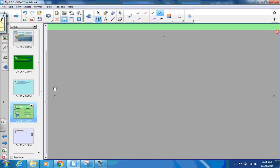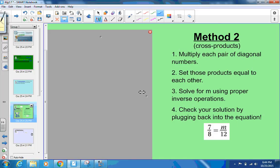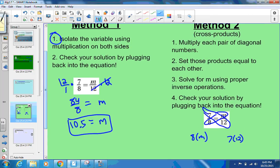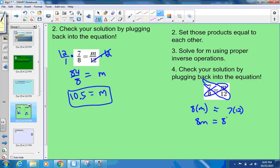Now I want to show you the other way, which we'll use most often. That's called cross products, and this is probably what you're familiar with. The cross products method says to multiply each pair of diagonal numbers. We have diagonally 8m, and we have 7×12. We're going to do 8 times m, 7 times 12. Then it says set those products equal to each other. The cross products property says that cross products of a proportion are equal. So this would be 8m equals 7 times 12, which is 84.